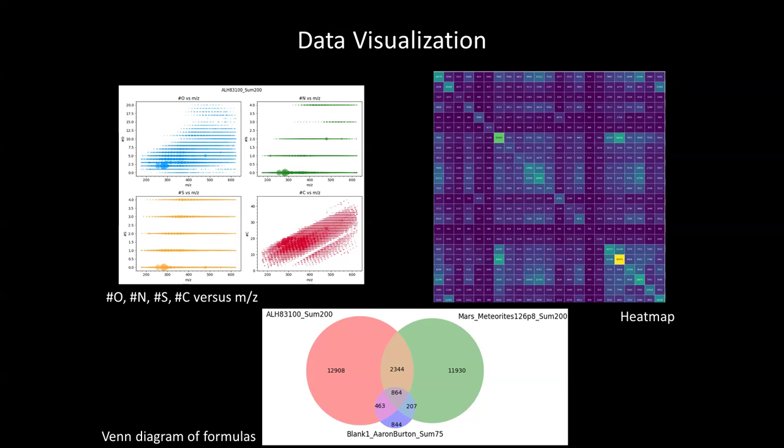With the Venn diagram, we can see the overlap and uniqueness of molecular formulas, but this is limited to a subset of three samples. And with a large amount of samples, the visualization technique is not as effective, but this is where we can employ heat maps to showcase common formulas between the samples and their relative percentage overlap.